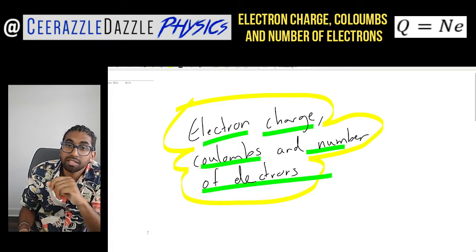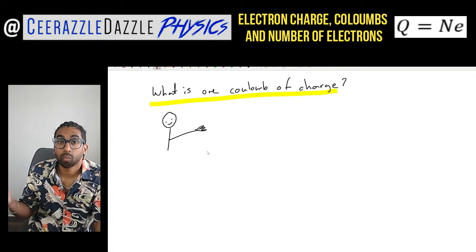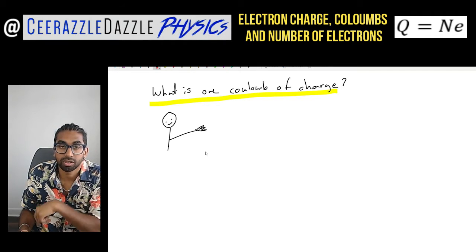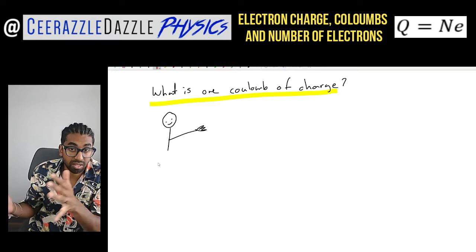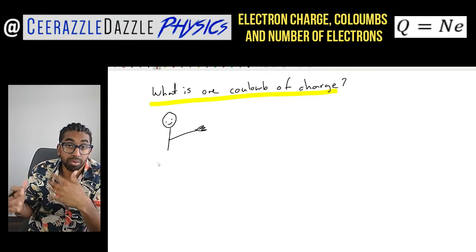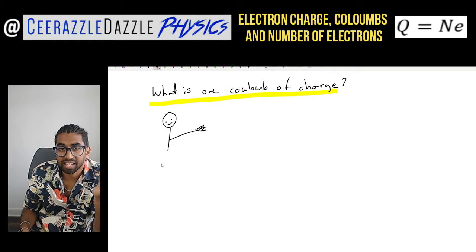Right, let's start with the following big question: what is one coulomb of charge? Lower down the school you probably found out that there is something called charge and you probably talked about coulombs, but what exactly is one coulomb of charge?